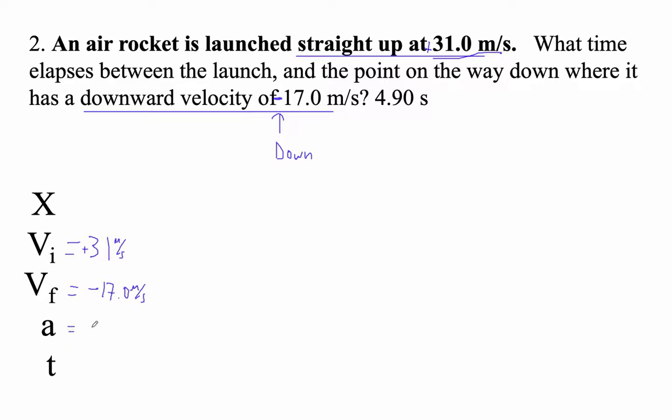And then the acceleration is going to be negative 9.8. So let's draw a little picture of this. Here's the ground. Rocket goes up, and then it goes down to some point where the velocity, the final velocity is negative 17 meters per second. Here's the initial velocity, positive 31.